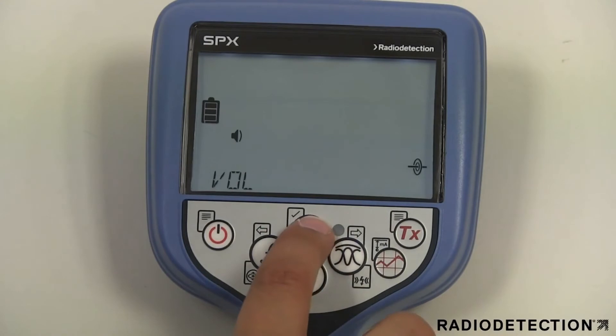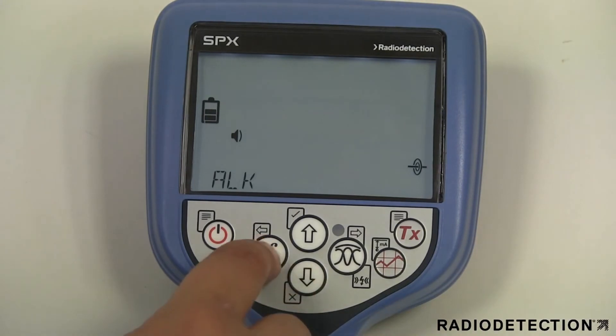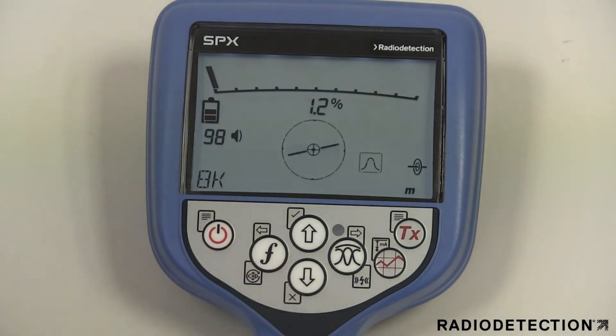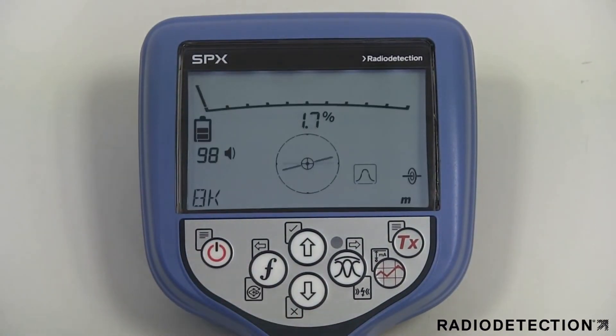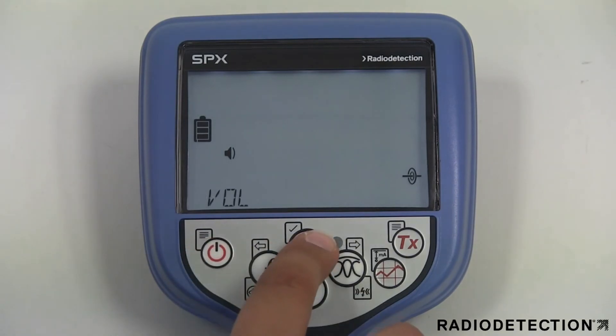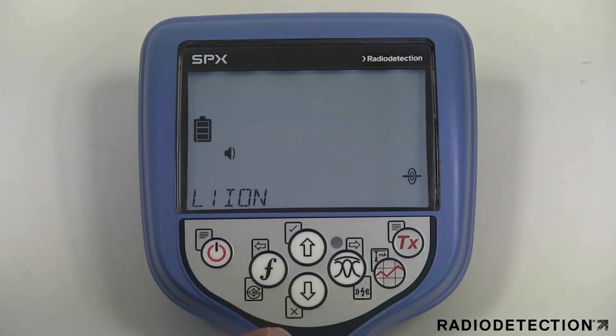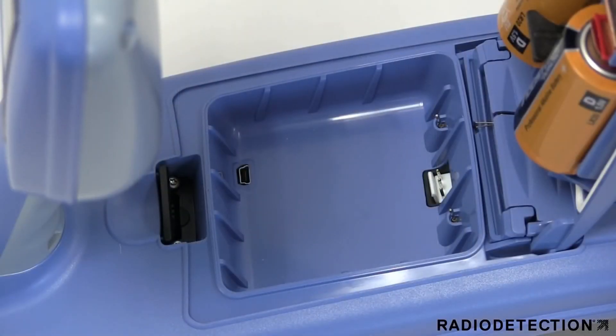When you power on the locator for the first time, you will need to select the battery option that you are using. Our precision locator range is shipped as standard configured to use D cell alkaline batteries. You should set the locator battery type to match the currently installed battery option to ensure optimal performance and correct battery level indication. If you are using the optional lithium-ion battery pack, the locator will automatically select the correct battery type.